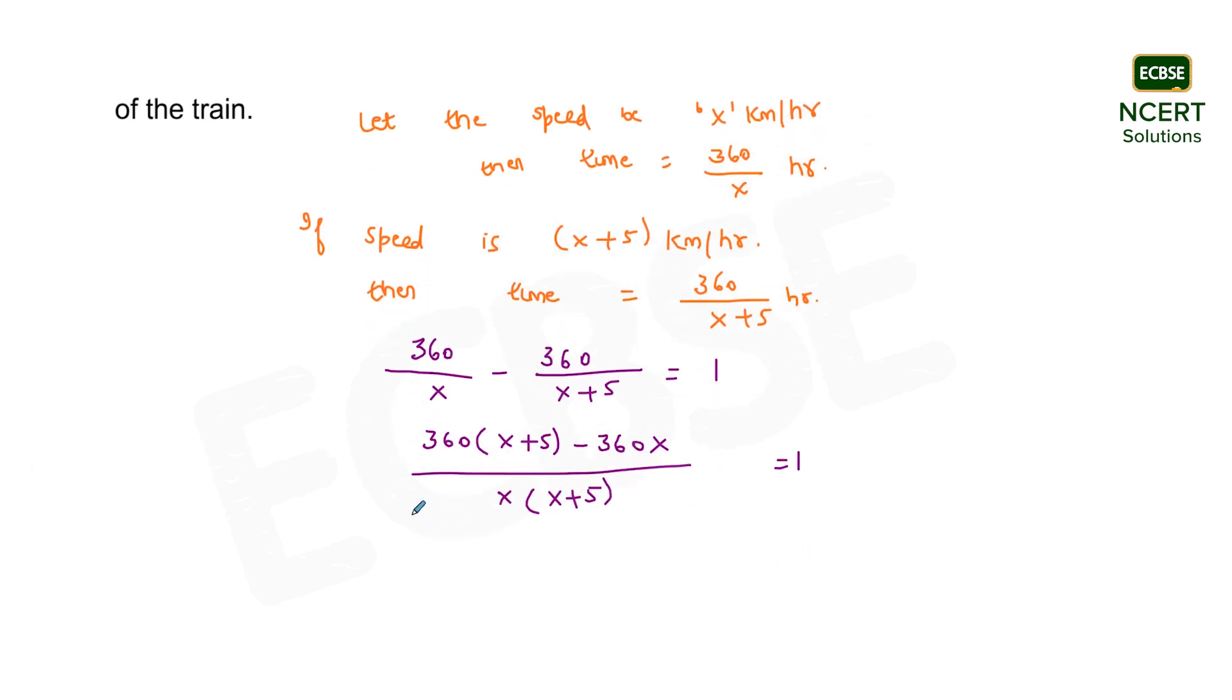Or I can write it as 360x plus 1800 minus 360x equals x squared plus 5x. That is, on cross multiplying. On simplifying, I will be getting x squared plus 5x minus 1800 equals 0. So this is the quadratic equation being formed for this question.